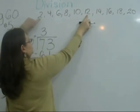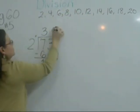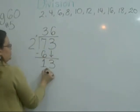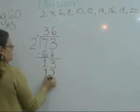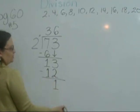How many 2's? 1, 2, 3, 4, 5, 6. 6 times 2 is 12. Subtract. I have 1 left.